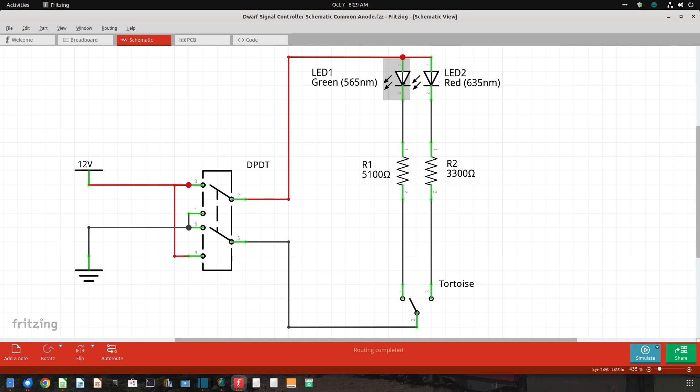This single circuit will control common anode devices or common cathode devices, simply by setting the DPDT switch in the appropriate position.